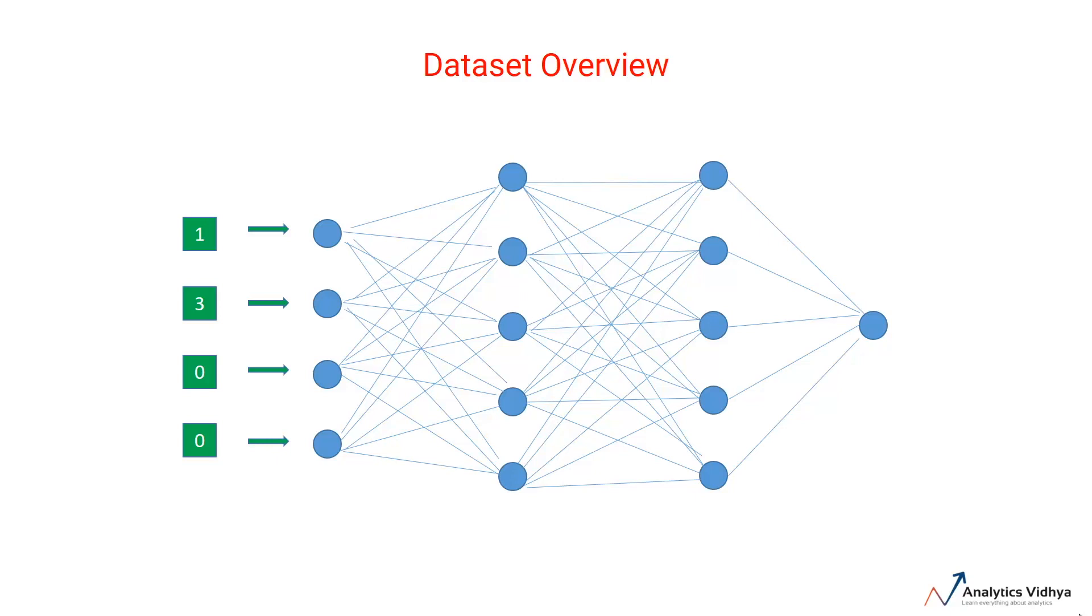Hence, the weights of a neuron can be more appropriately thought of as weights between two layers since edges connect two layers. Now, let's talk about this first neuron in the first hidden layer.